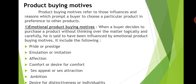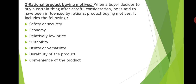Desire for distinctiveness or individuality: sometimes customers buy certain things because they want to possess things which are not possessed by others. Purchasing and wearing a particular type of dress is because of their desire for distinctiveness or individuality. Also, hunger and thirst — food, drinks, etc. — are bought because of this motive. Habit is also one of the important emotional buying motives; for example, many customers buy cigarettes because of their sheer habit.